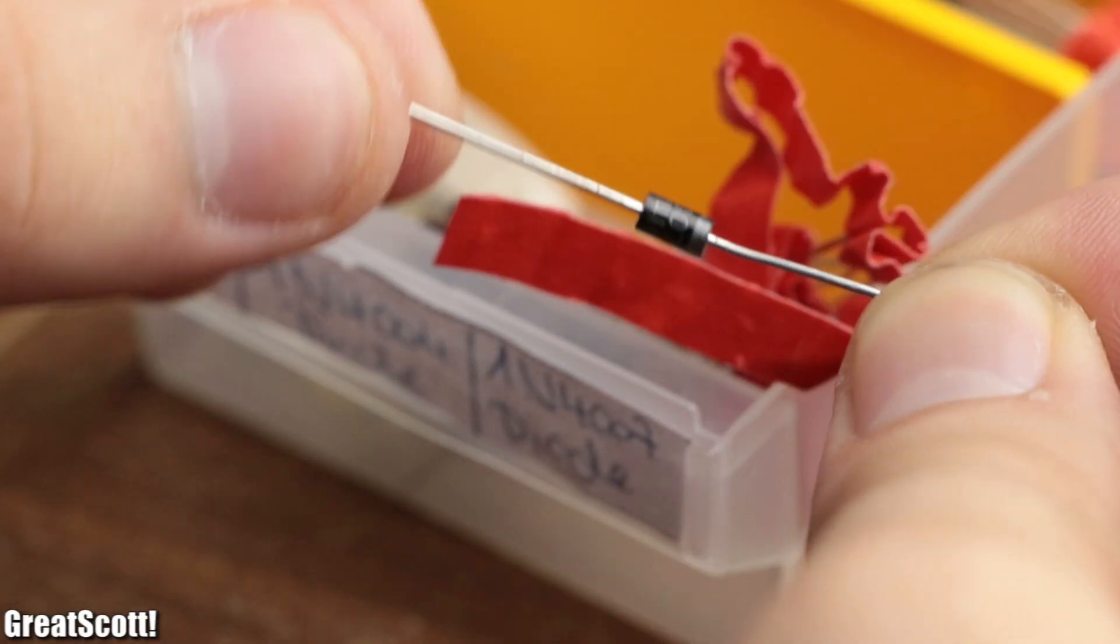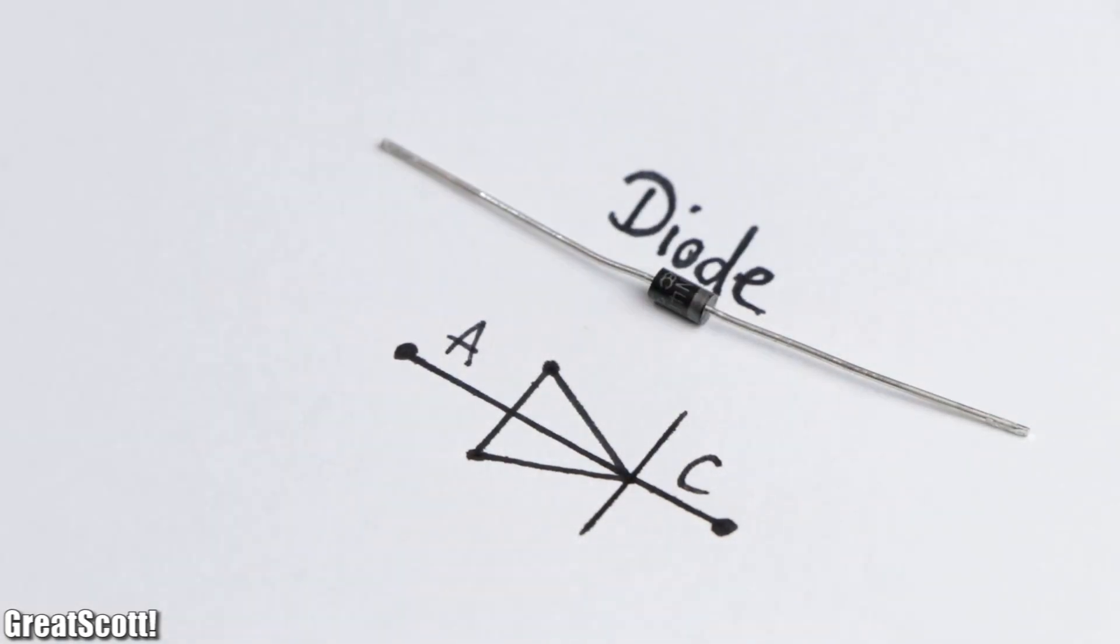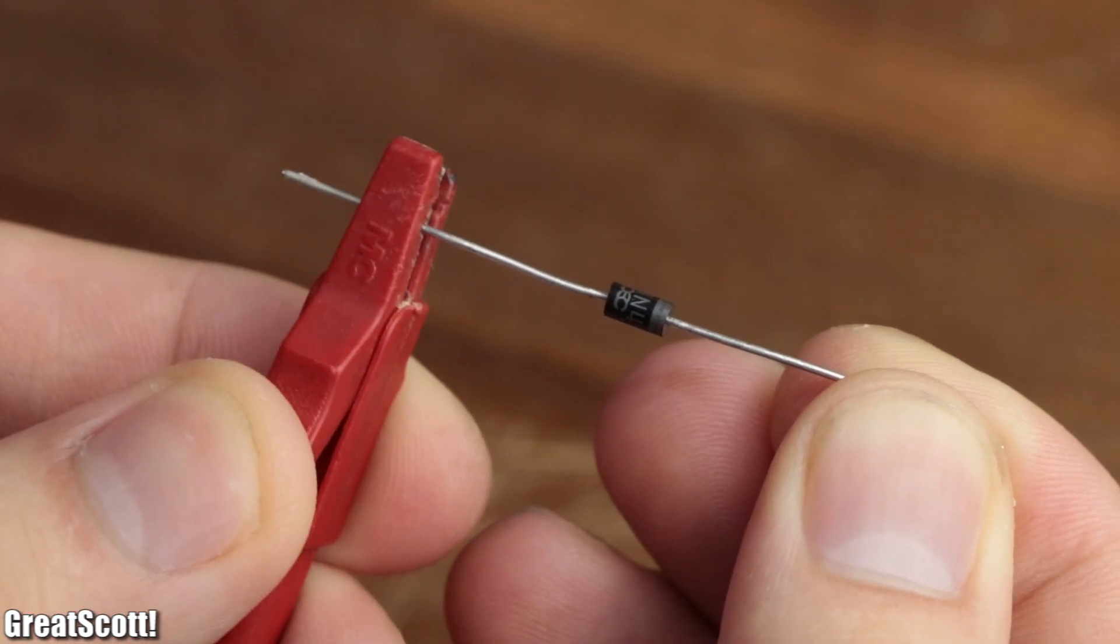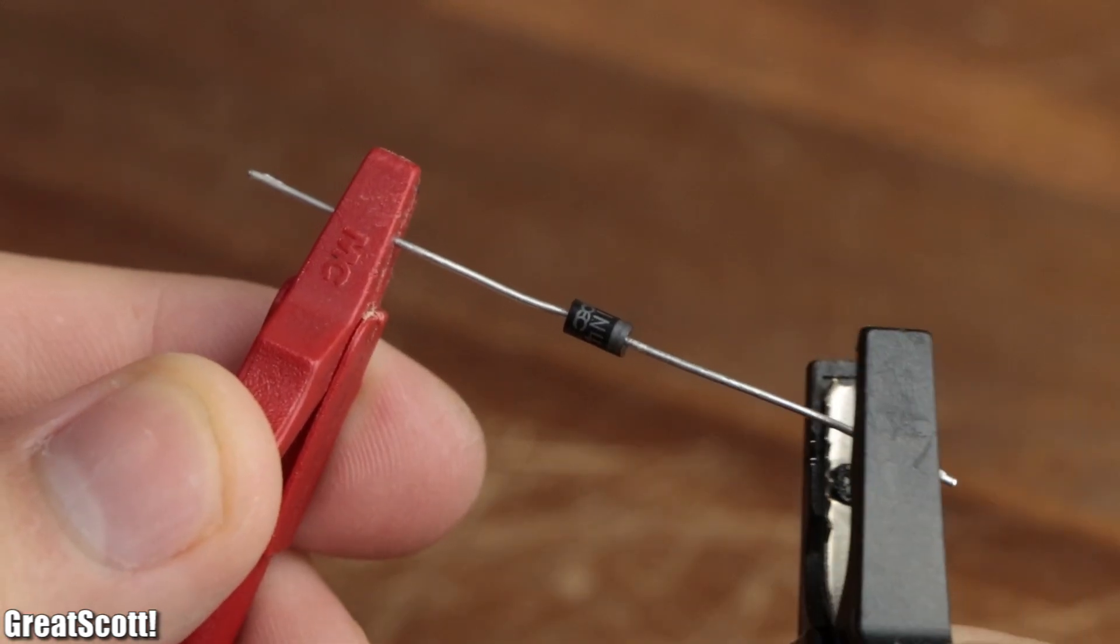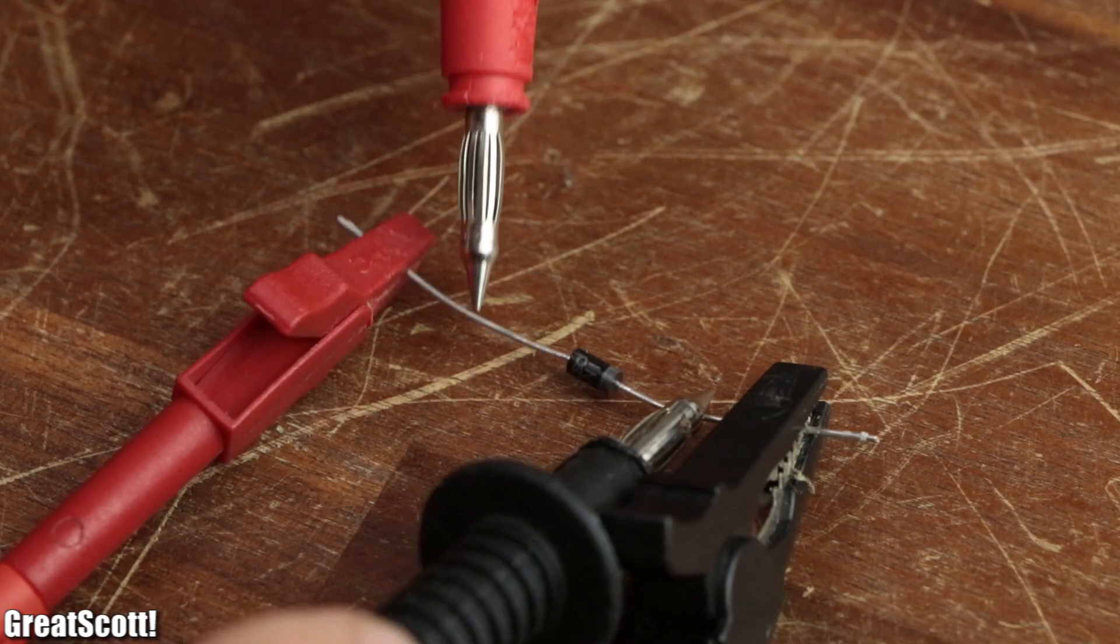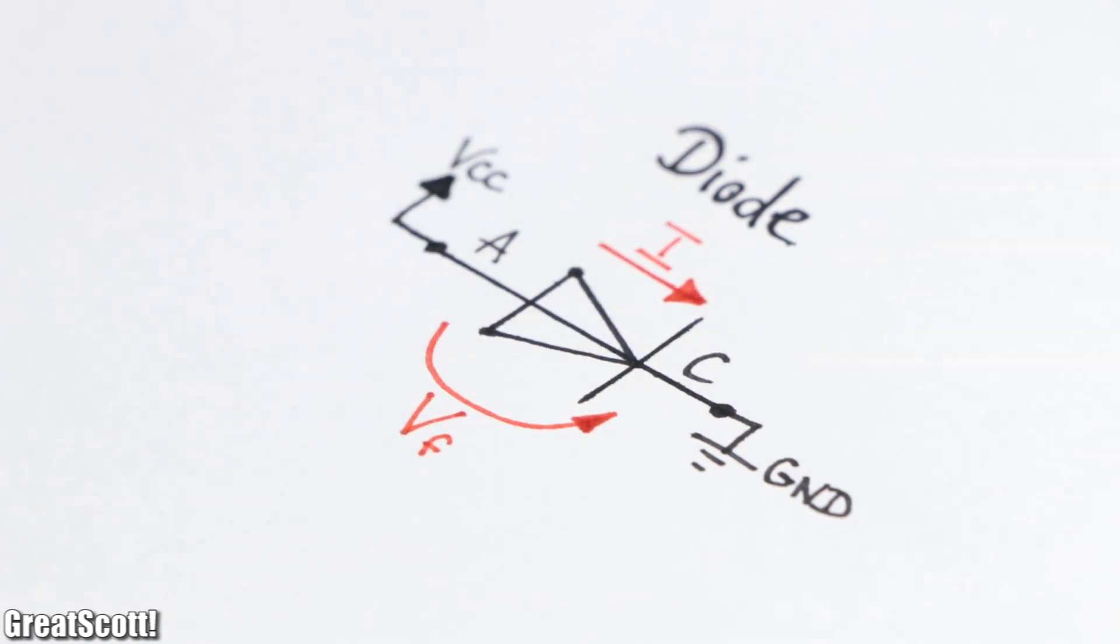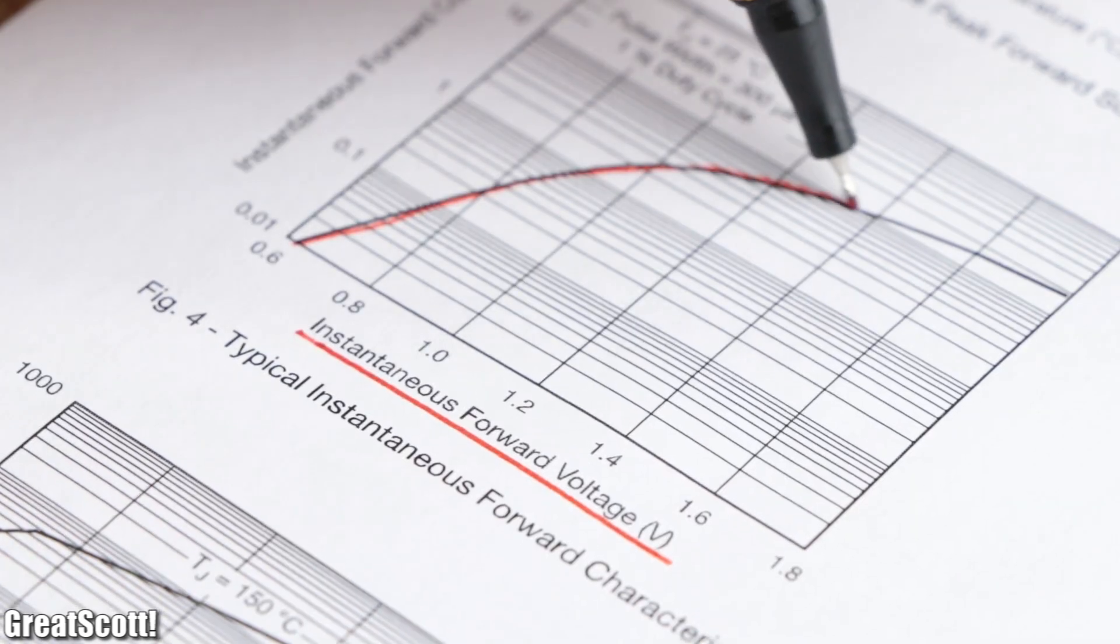As you might know, the common diode is a very useful electrical component. By applying a positive voltage to its anode and a negative voltage to its cathode, current will flow through it and simultaneously create the characteristic forward voltage drop across the diode, which is always mentioned in the datasheet.